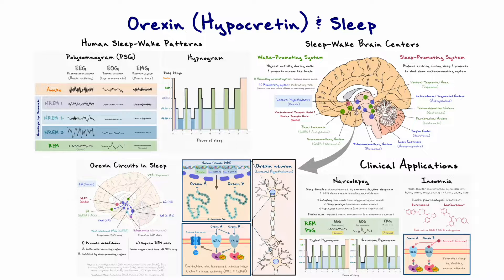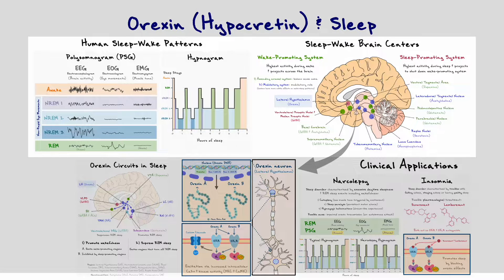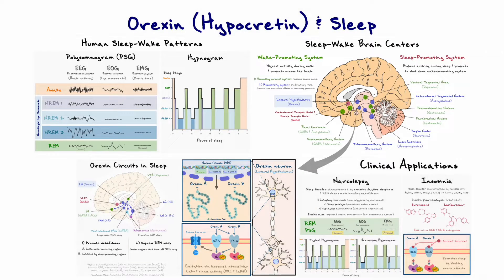Before we dive deeper into this video, I want to mention very quickly that I will assume some neuroscience background out of you, so if I go too quickly over some concepts and it isn't clear, make sure to let me know in the comments so I can redirect you to the appropriate resources. Now, to understand the core concepts that relate to orexin neurons and sleep, we first need to understand some basic concepts of how human sleep-wake patterns occur and how they are mediated by the brain.